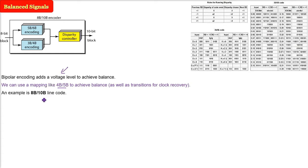We can use 8b/10b line code. In 8b/10b, 8 bits of input are mapped to 10 bits of output. The 8 bits are the input and 10 bits are the output.